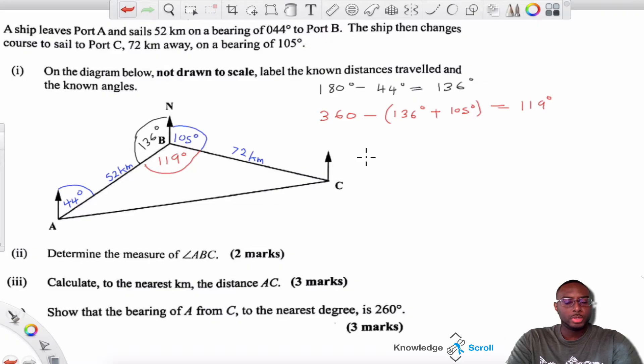So now we move on to part three, which asks us to calculate the nearest kilometer, the distance AC, and that will be this line here. Now, I'm going to label this unknown side A and I believe I will be using the cosine rule because I have an angle and I have two sides and the angle is in between these two sides. Okay, so we're going to use the cosine rule. In case you forget what it is, remember it is A squared equals to B squared plus C squared take away, open bracket, two times B times C times cosine of the angle.